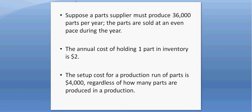Suppose a parts supplier must produce 36,000 parts per year. We're going to assume that the parts are sold at an even pace during the year. The annual cost of holding one part in inventory for the entire year is $2. The setup cost for a production run of parts is $4,000, regardless of how many parts are produced in a production run.